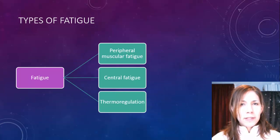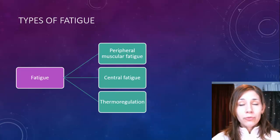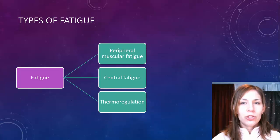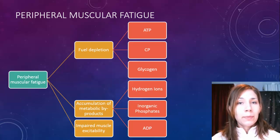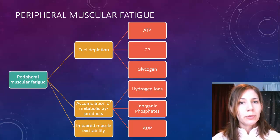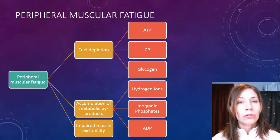There are three types of fatigue when looking at physiological reasons: peripheral muscular fatigue, which is just in the muscles; central fatigue, which involves the brain and spinal column; and thermoregulation, which is how well you can control your body temperature. Peripheral muscular fatigue is about what happens in the muscles — you might run out of fuels (fuel depletion), build up wastes (accumulation of metabolic byproducts), or there might be impaired muscle excitability.